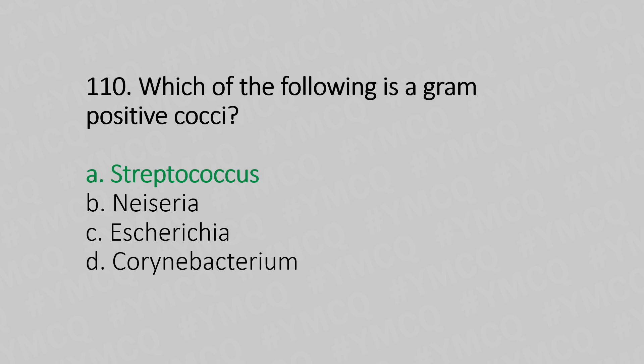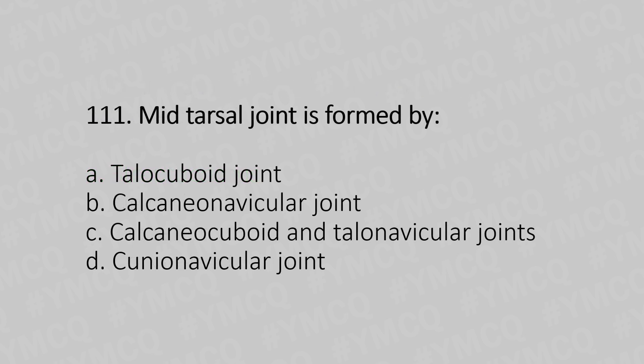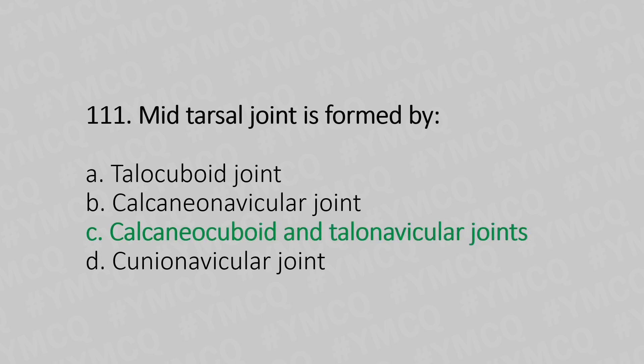Now let's move to question number 111. Mid-tarsal joint is formed by: Option A, talocuboid joint. Option B, calcaneonavicular joint. Option C, calcaneocuboid and talonavicular joints. Option D, cuneonavicular joint. And the answer is Option C, calcaneocuboid and talonavicular joints.